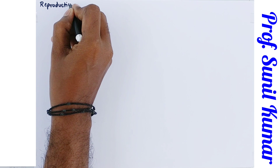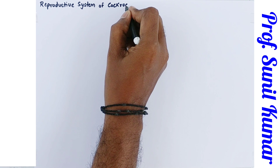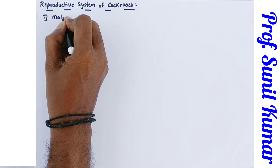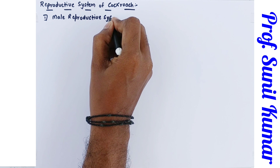When you talk about the reproductive system of cockroach, it includes both male and female reproductive systems. This is one of the most important topics as far as NEET is concerned, because some questions can come in your exam. First we need to understand how we are supposed to draw the diagram of the male reproductive system.